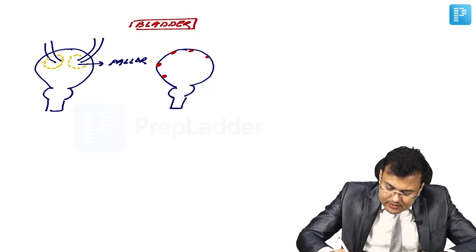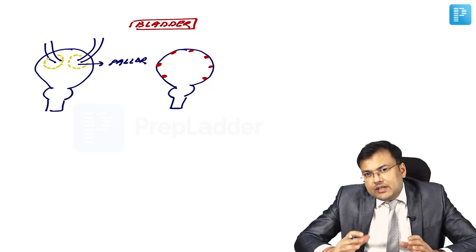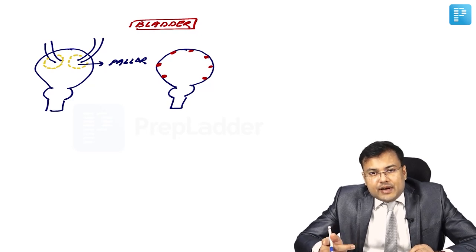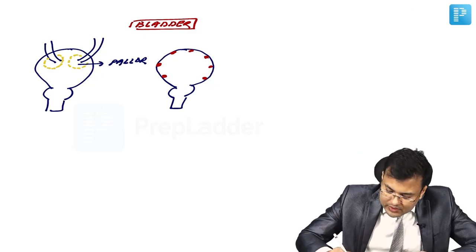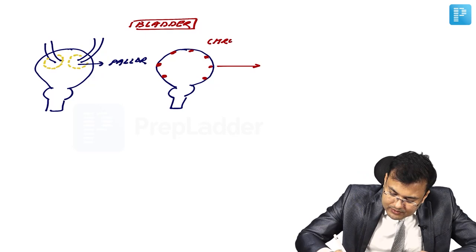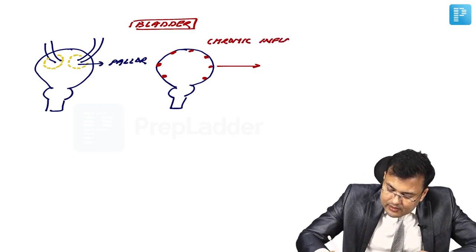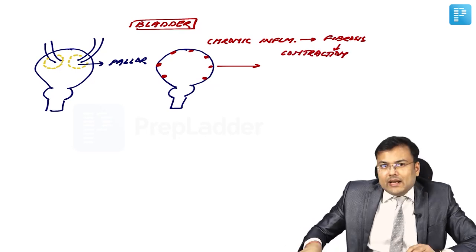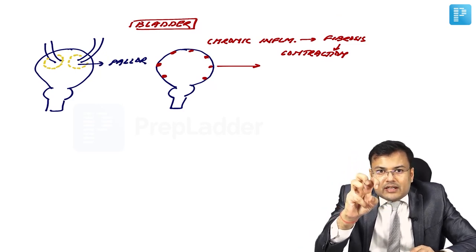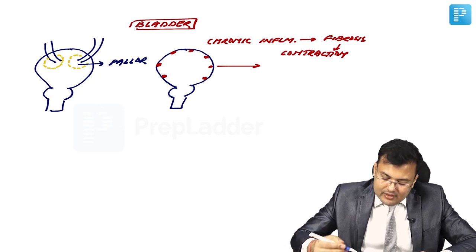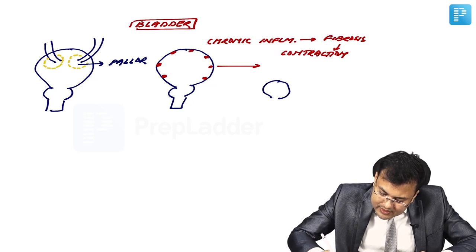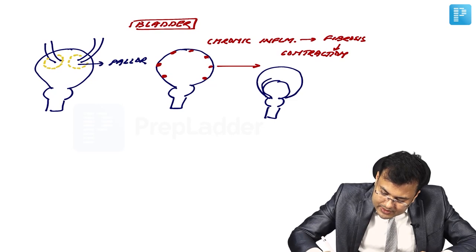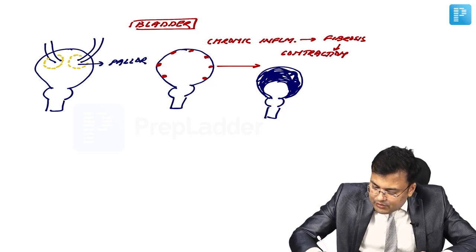In the bladder, tubercles form, leading to chronic inflammation, then fibrosis, then contraction. The result is a small contracted bladder known as thimble bladder, with decreased and irregular capacity resembling a thimble. Because of the small contracted bladder, the ureteric orifice appears on cystoscopy as a golf hole — called golf hole ureteric orifice.